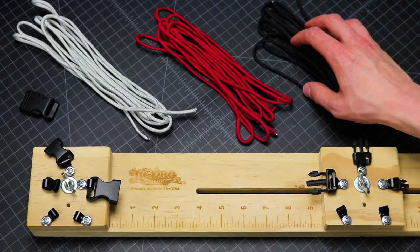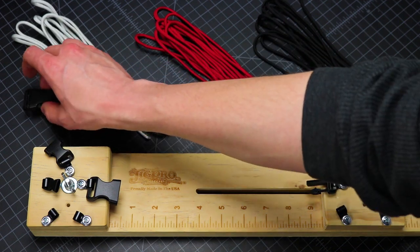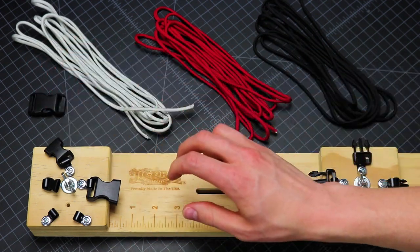So to make our three color trilobite bracelet, I've got black, red, and silver, along with a three-quarter inch buckle and a jig.